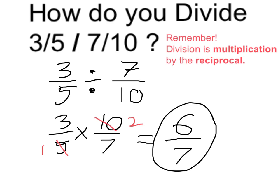My final answer is six-sevenths, and like I expected, six-sevenths is a bit less than one. Seven-tenths goes into three-fifths, six-sevenths of a time.